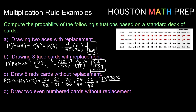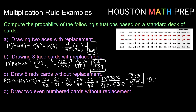That denominator is an even larger number: 311,875,200. If we divide those and reduce, we get 253 out of 9,996 as our fully reduced probability. To get a decimal answer, that is about 0.025 — so about a 2.5% chance of that happening.